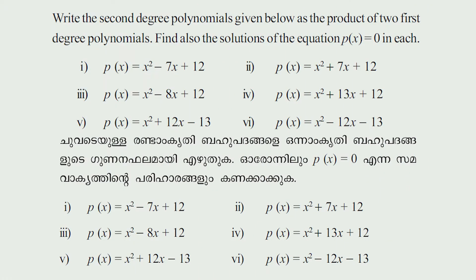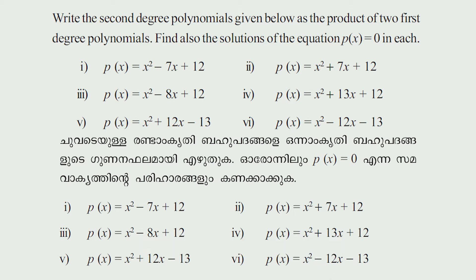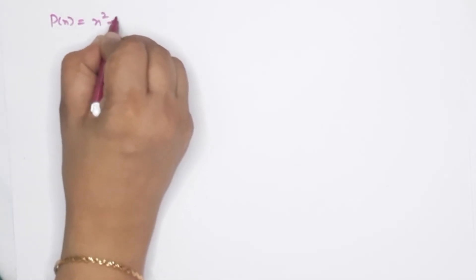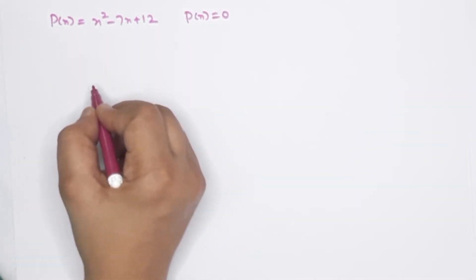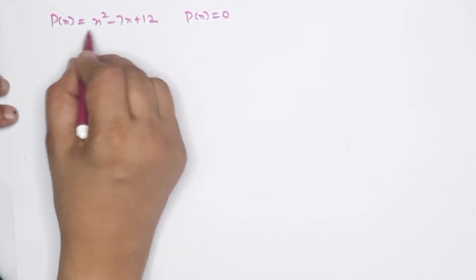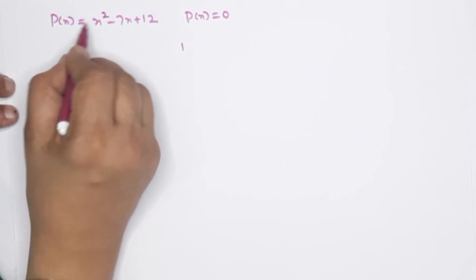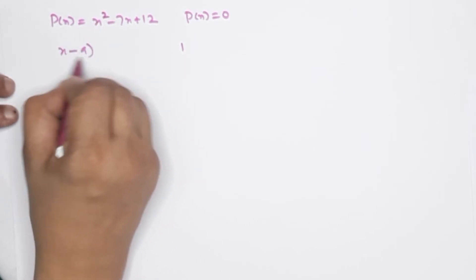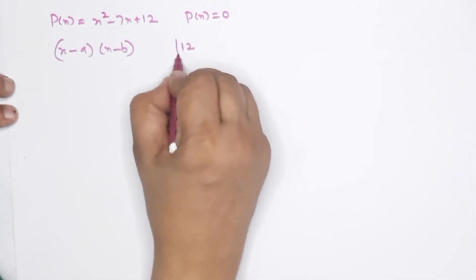Write the second degree polynomials given below as the product of two first degree polynomials. Find also the solution of the equation P(x) equal to 0 in each. The first question: P(x) equals x squared minus 7x plus 12. We need to find two polynomial factors. This is a second degree polynomial written as the product of two linear factors x minus a and x minus b.